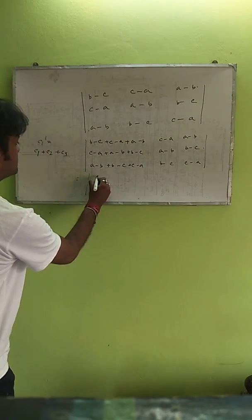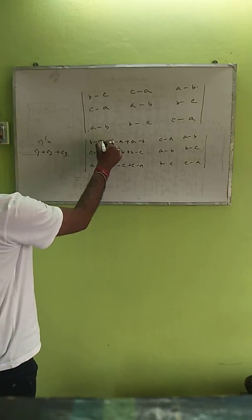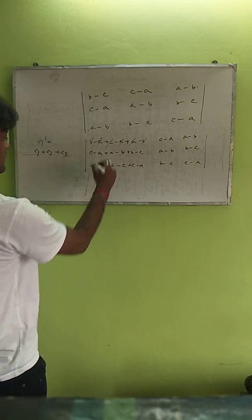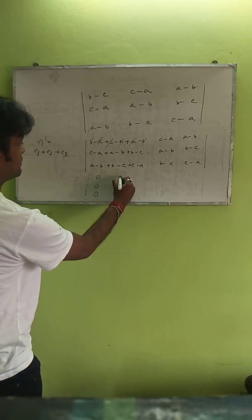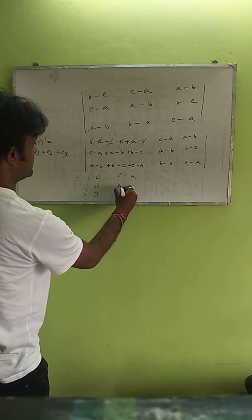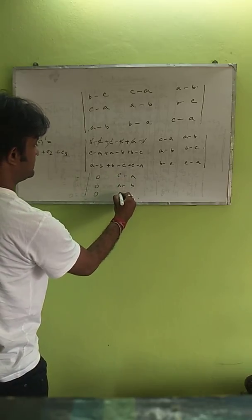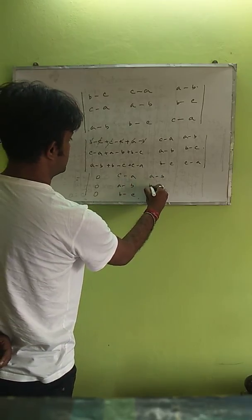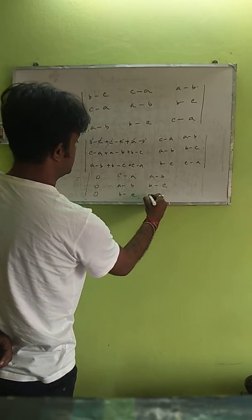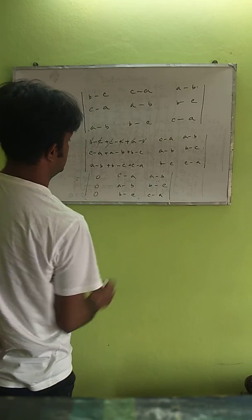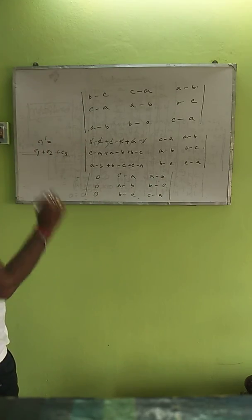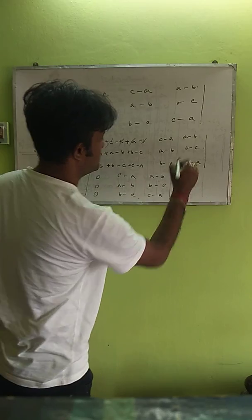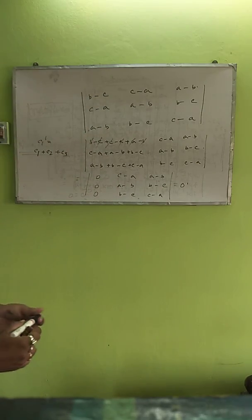All these sums equal 0, so the first column becomes 0, 0, 0. The remaining columns are c−a, a−b and a−b, b−c and b−c, c−a. Since all elements of the first column are 0, the value of the determinant will be 0.